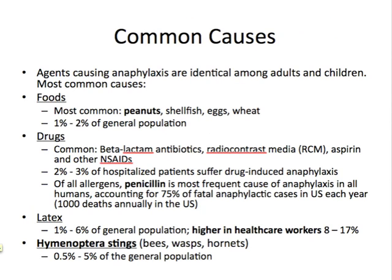On to the epidemiology — common causes. Agents causing anaphylaxis are identical among adults and children, so there's no real difference there. The most common causes fall into four main categories: foods, drugs, latex or substances, and insect stings. Out of foods, the most common are peanuts, shellfish, eggs, and wheat. The most common is definitely peanuts — I think we all know someone with a peanut allergy. People with gluten allergies can also have severe anaphylactic reactions and have to be very careful.